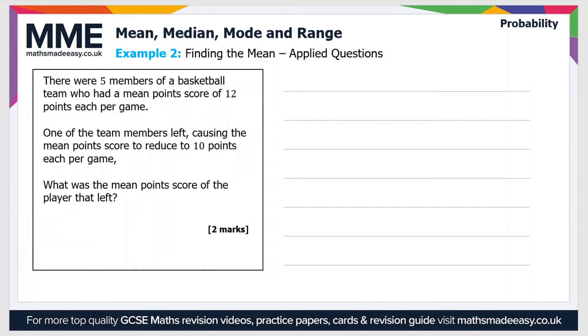So the second example then is a bit more applied. There were five members of a basketball team who had a mean point score of 12 points each per game. One of the team members left causing the mean point score to reduce to 10 points each per game. What was the mean point score of the player that left?